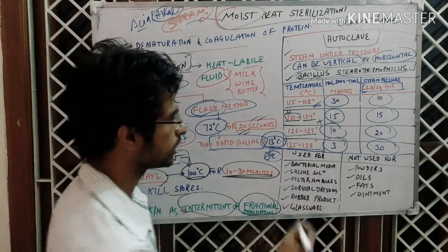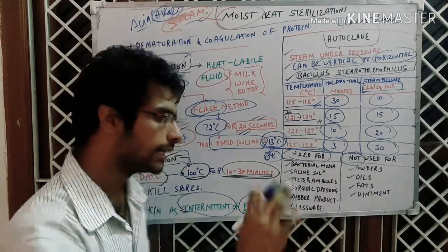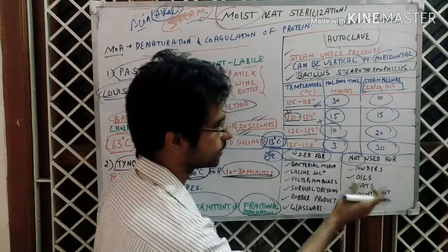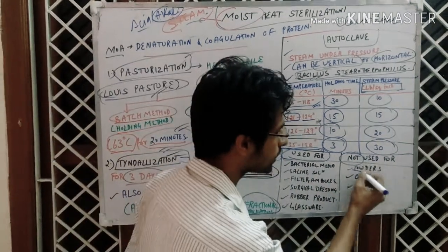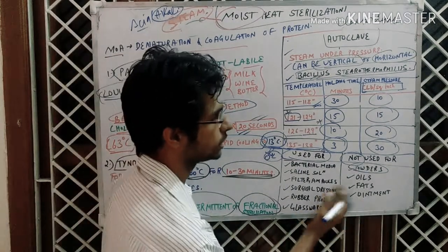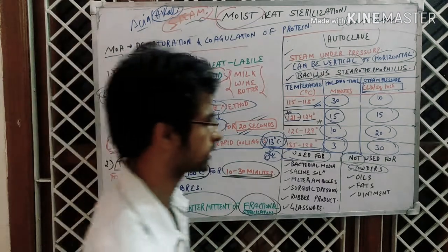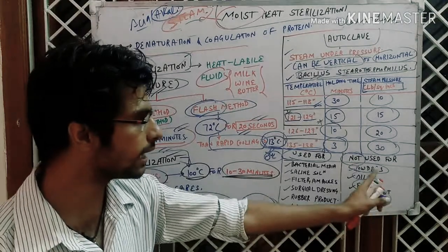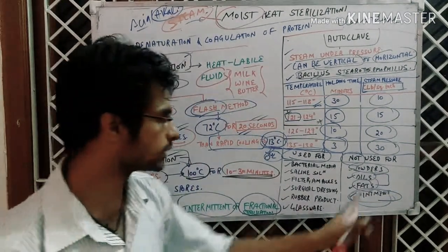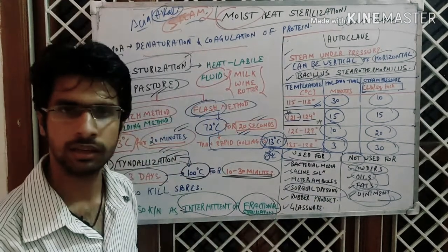Please note this table as it is very important for GPAT, NIPER, or ICMR examinations. Now the autoclave: used for and not used for. Not used for: powders cannot be sterilized because steam could make reactions with the chemicals or pharmaceutical products. Oils, fats, and ointments cannot be sterilized — they can cause rancidity. Emulsions also cannot be sterilized by moist heat.